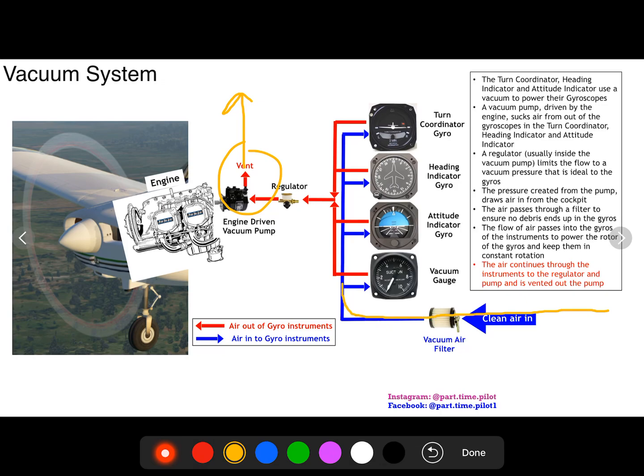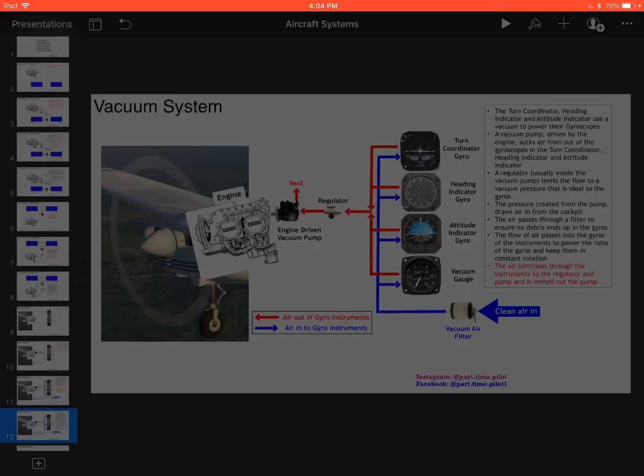And that's it. So in through the cockpit, into the instruments, powering the gyro, out of the instruments, through the regulator, ensuring a consistent amount of flow into the pump and out of the pump. And that is your vacuum system. Thank you.